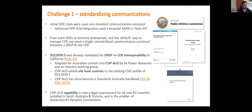Challenge one was standardizing communications protocols. Our first DOE trial with Tesla used a bespoke SAPN-to-Tesla API that wasn't suitable for use anywhere else. We wanted this to become statewide or national, so we needed a single standardized way to communicate between a DNSP and all devices at a home. We scanned globally and the leader in this space was the IEEE 2030.5 standard, already mandated for interoperability between a network and site in California under Rule 21 — a huge player in the energy space often setting international precedents.